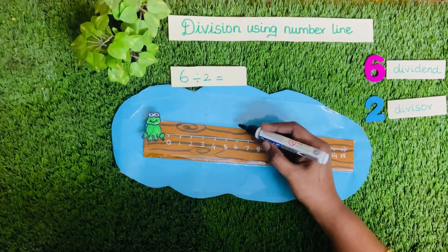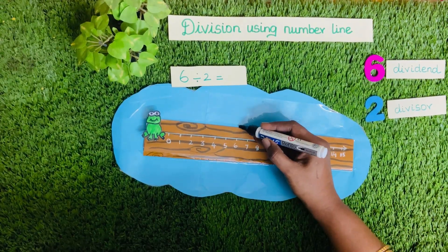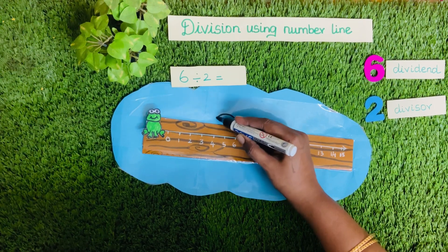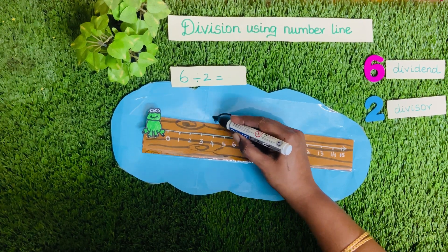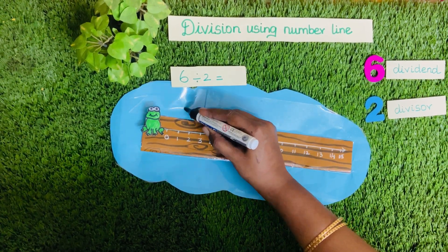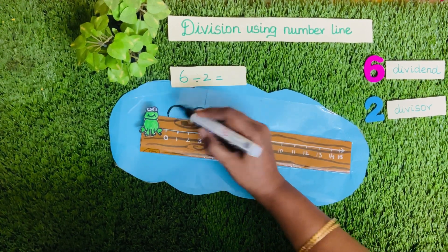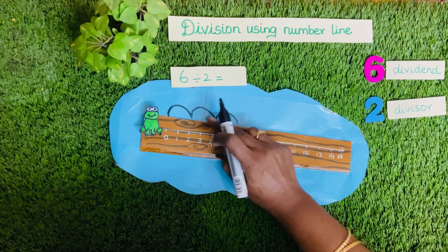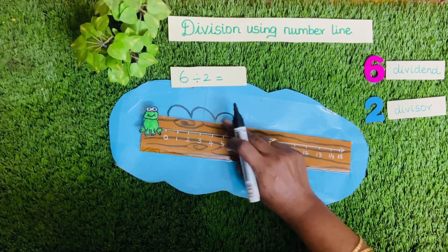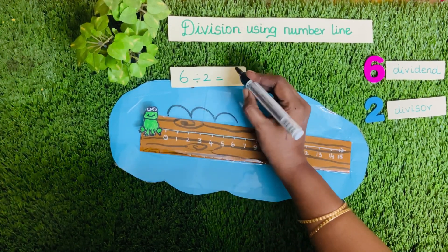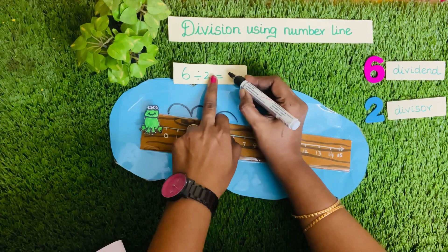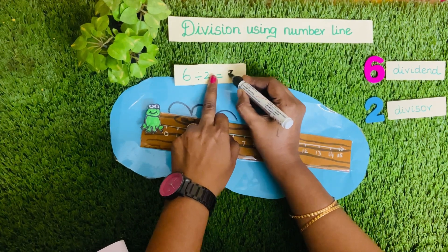Let's count the number of jumps. From 6 to 4. From 4 to 2. From 2 to 0. That's 1, 2, 3 — so 3 times. So 6 divided by 2 is equal to 3.